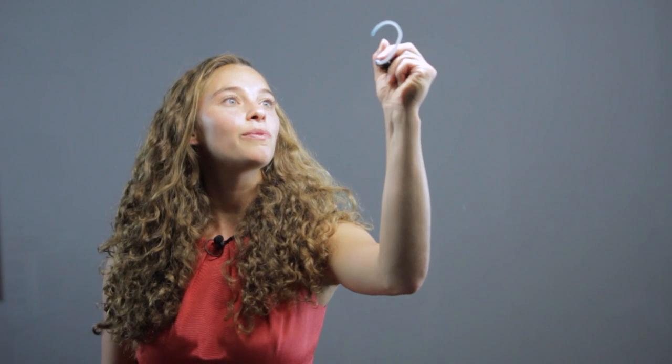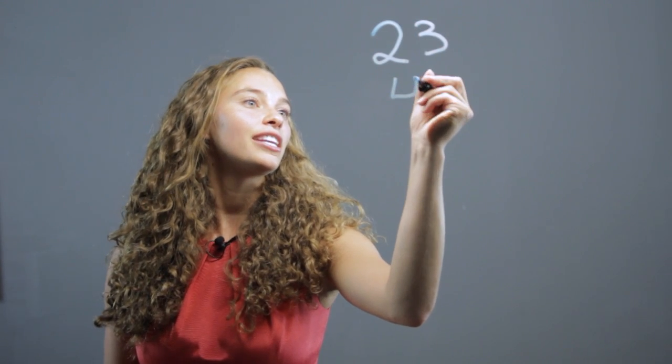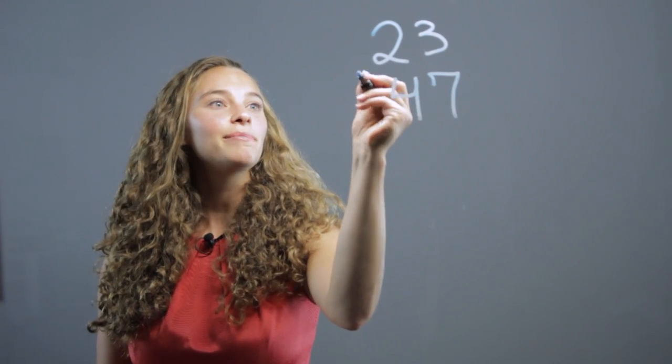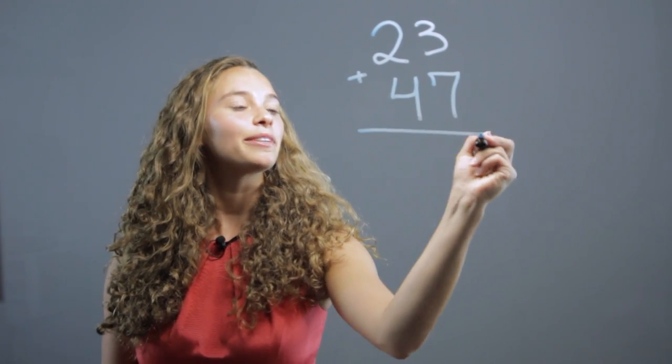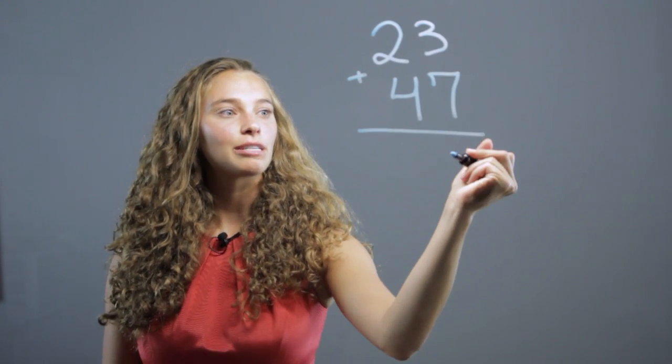Without regrouping, let's take the numbers twenty-three and forty-seven. When we add them together without regrouping, we do this: we add the three and the seven, which makes ten.